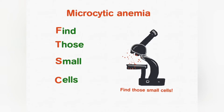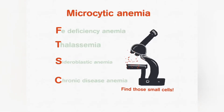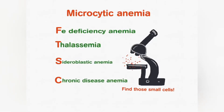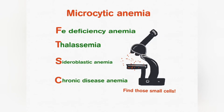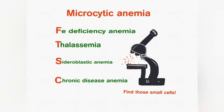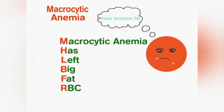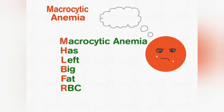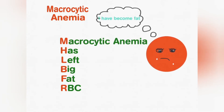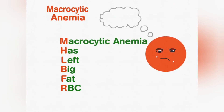For microcytic anemia, those small cells stand for iron deficiency anemia, thalassemia, sideroblastic anemia, and chronic disease anemia. Now for the large sized RBCs, we have macrocytic anemia.